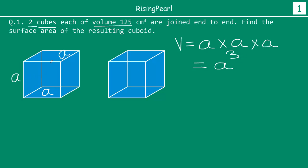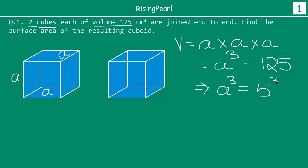For each cube, the volume is given as 125 centimeter cube. So A cubed equals 125. Now 125 we can write as 5 cubed — 5 times 5 is 25, and 25 times 5 is 125. So if A cubed equals 5 cubed, taking cube root on both sides, we get A equals 5. That means A is 5 centimeter, so each side of the cube measures 5 centimeter.